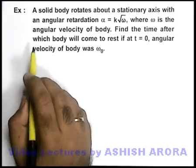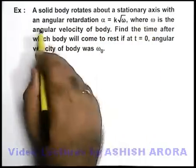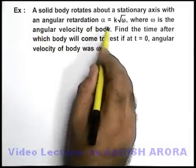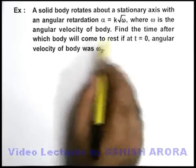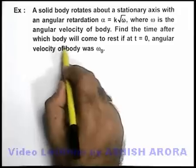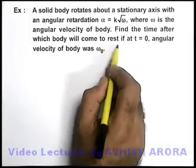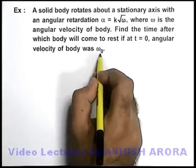In this example, we are given that a solid body rotates about a stationary axis with an angular retardation given as α equals k root ω, where ω is the angular velocity of the body. Find the time after which the body will come to rest if at t equals zero it is given that angular velocity of body was ω₀.